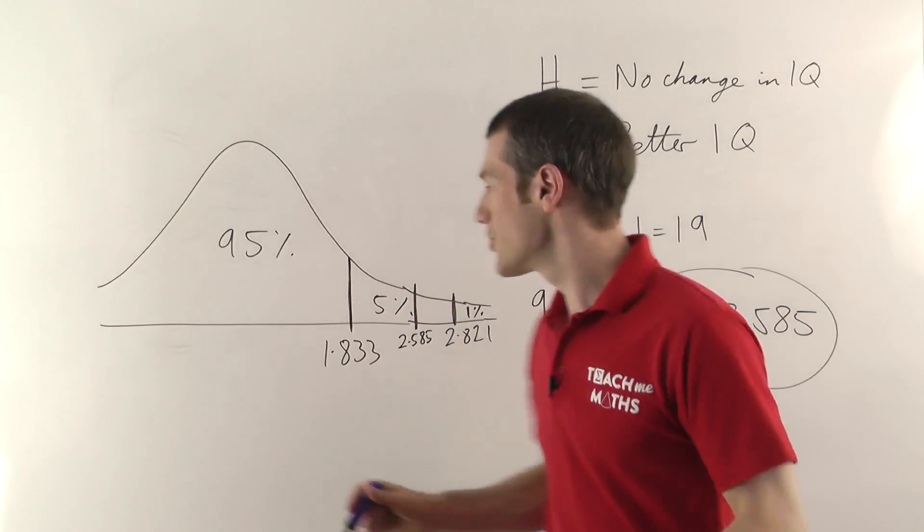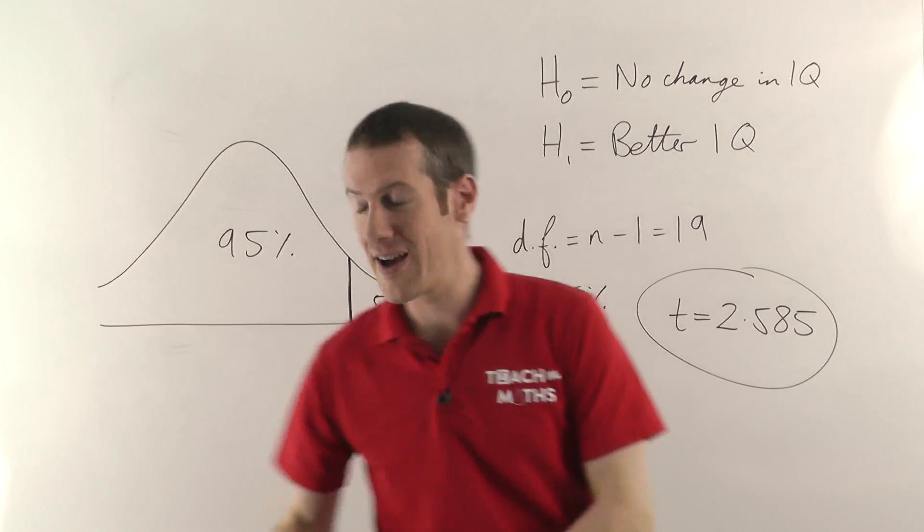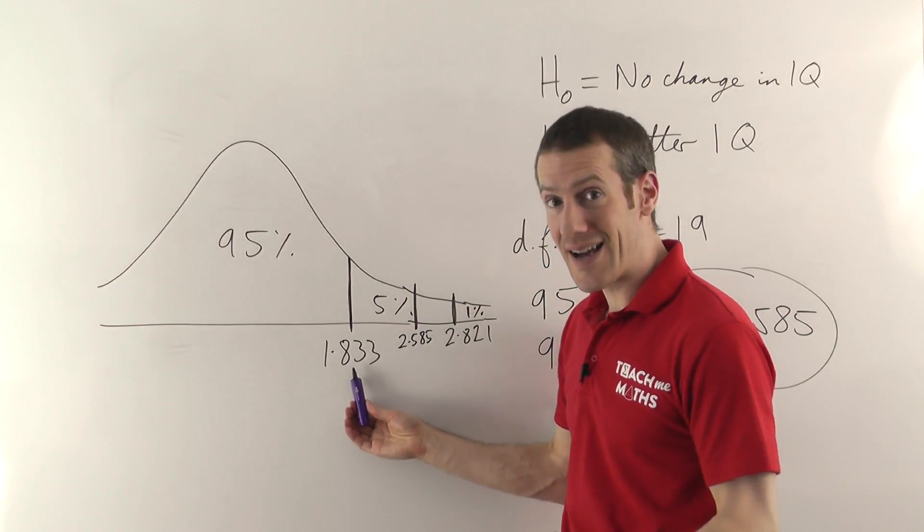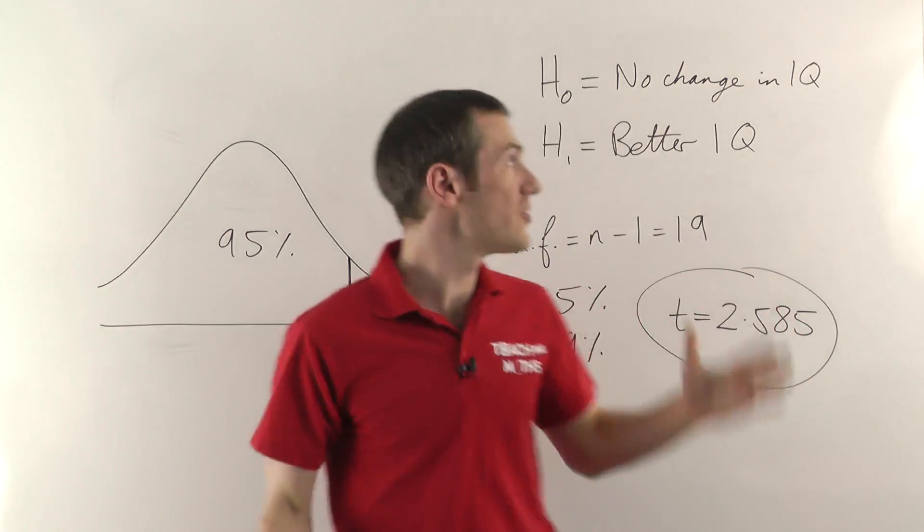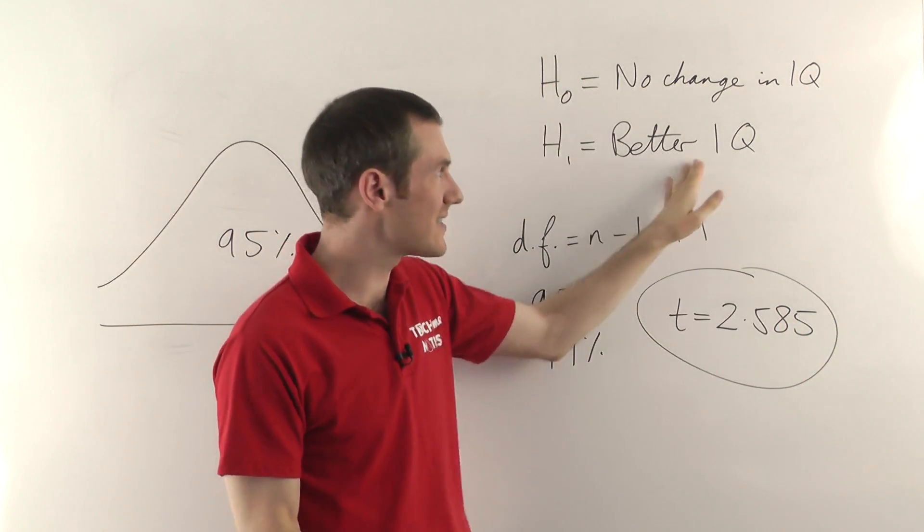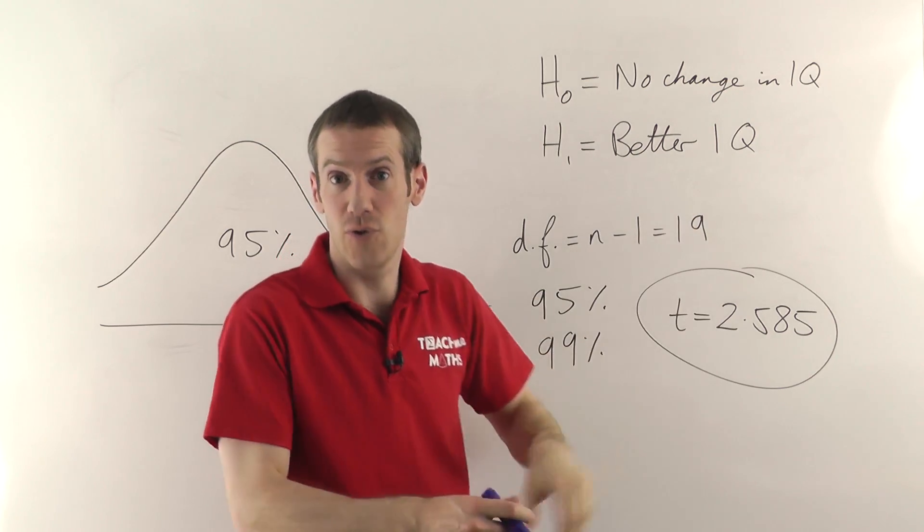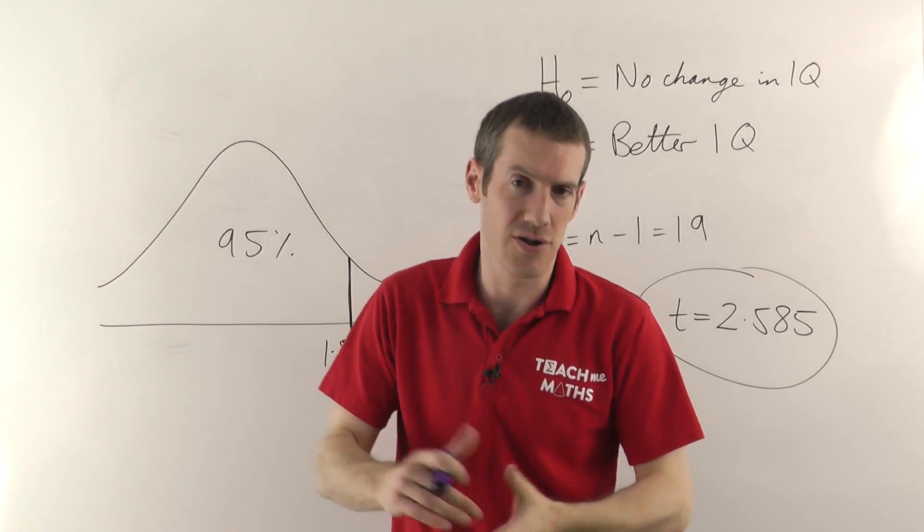And in general, as long as your T value, 2.585, is bigger than the one from the 0.95 level, the 95% level, then you can reject the null hypothesis and accept whatever change you're looking for, whatever improvement in this case in their IQ due to the drug.